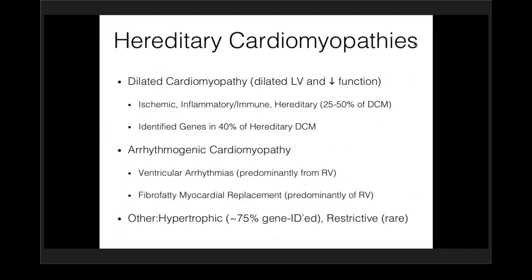When you look at any one particular gene in familial dilated cardiomyopathy, they're all relatively rare with the exception of perhaps just a few genes such as Titin truncation variants. Dilated cardiomyopathy is defined as a dilated left ventricle with reduced function, and within the hereditary dilated cardiomyopathies, we have identified genes in about 40%.